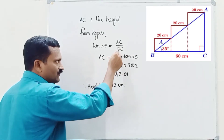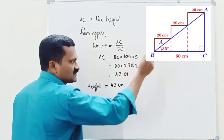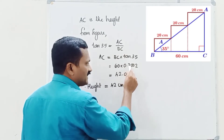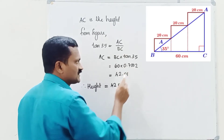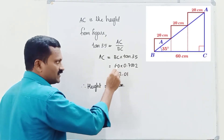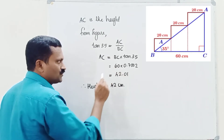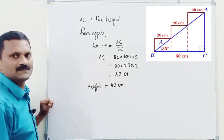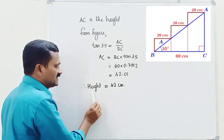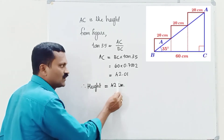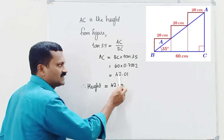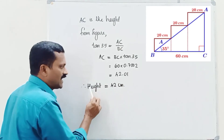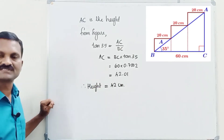From the figure, we can find that BC equal to 60 and tan 35 equal to 0.7002. Multiplying with 60, it becomes 42.01. That is the length of AC. So the height is 42 centimetres — 0.1 is negligible. Height equal to 42 centimetres.